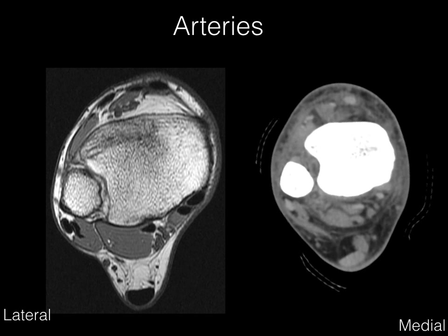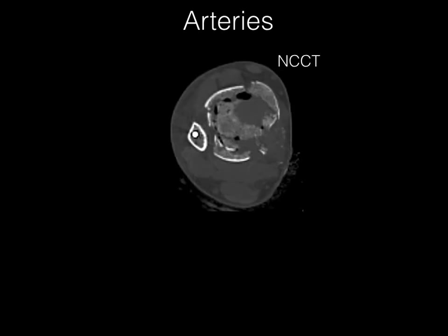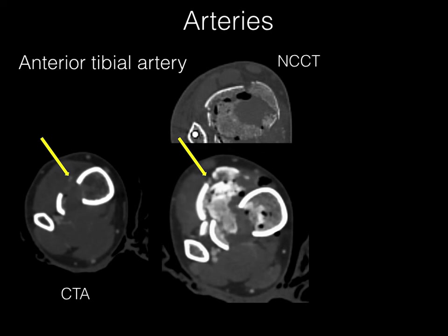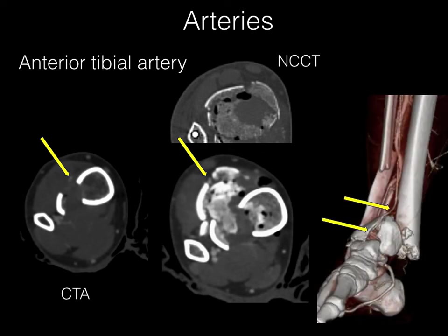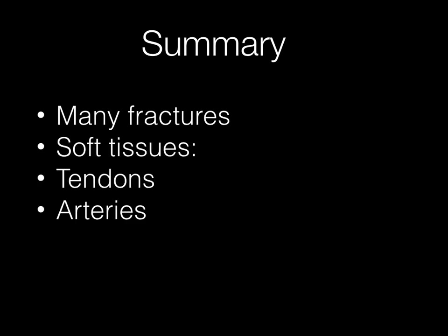Other important soft tissue structures to look for are the arteries. Arteries can be difficult to see on non-contrast CT, so keep in mind where they live: anterior, posterolateral, and posteromedial. On non-contrast CT we see the fracture but don't know exactly where the artery is relative to it. With CTA, we can show that the artery is entrapped — here is a 3D image showing entrapment of the anterior tibial artery. In summary, there are numerous fractures to look for especially in the foot, and always look at the soft tissues including the tendons and arteries.